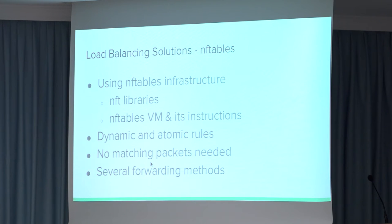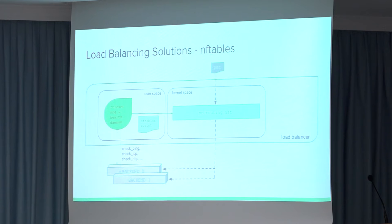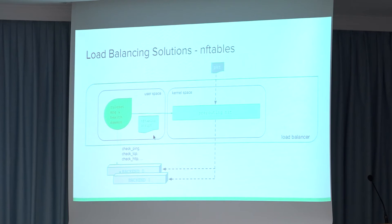Another improvement is that no matching or marking of packets is needed, so the performance is going to be very good. We have several forwarding methods — the same forwarding methods that IP tables is able to provide. From the user space perspective, we have the ruleset manager and health check daemon. In just one NF tables script, we are able to atomically load those rules, just updating the NAT table in kernel space. This will provide much more performance than with IP tables.